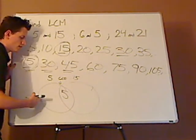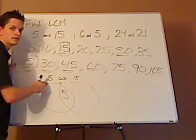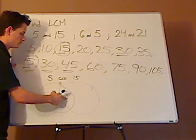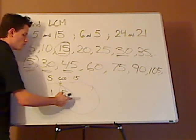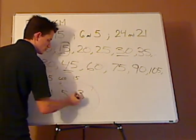So the GCF of 5 and 15 is 5. Then what goes in these other blanks is, what times 5 will give me 5? What times 5 will give me 5? 1. What times 5 will give me 15? 3.